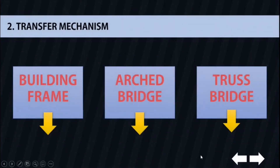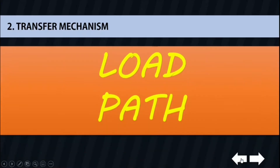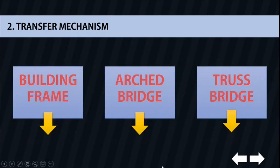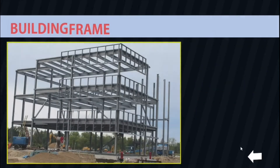Multiple elements are used to transmit and resist external loads within a building. These elements define the mechanism of load transfer in a building, known as the load path. The load path extends from the roof through each structural element going to the foundation. An understanding of the critical importance of a complete load path is essential for everyone involved in building design and construction.